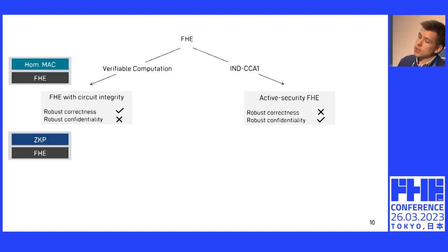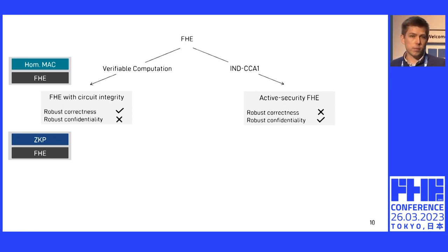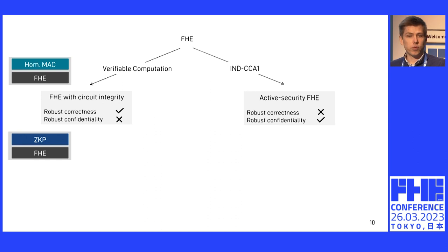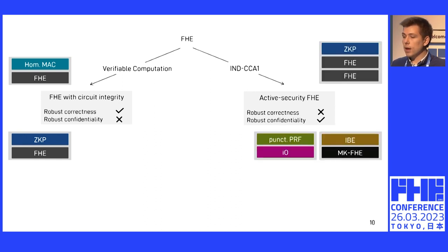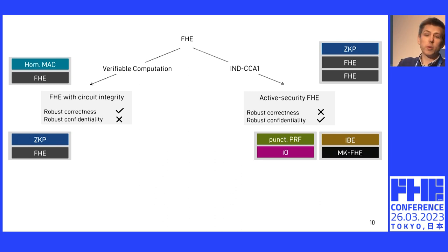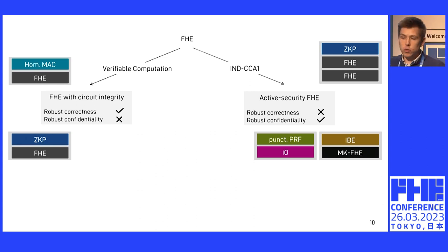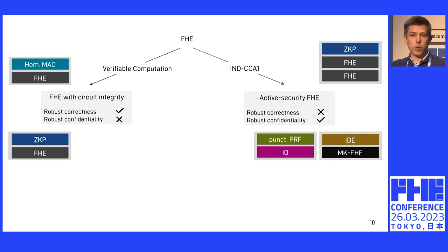On the VC side, people have been using two main techniques: zero-knowledge proofs for correct evaluation, and homomorphic message authentication codes embedded to prove correct computation. On the CCA1 security side, we get more exotic constructions, for example using indistinguishability obfuscation, and also more classical paradigms such as the Naor-Yung double encryption paradigm, where you take two different instances of the FHE scheme, encrypt twice, prove correct encryption, and then also prove correct evaluation.